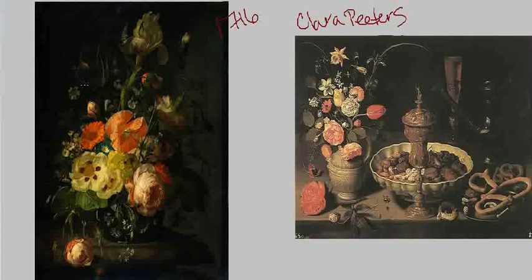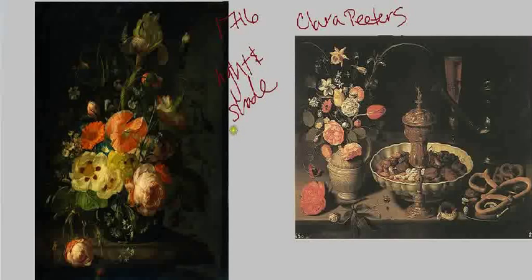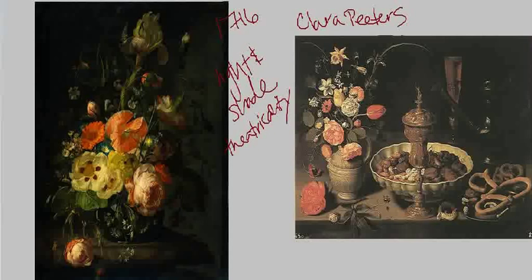We're seeing things we've been talking about in the Baroque that are so typical of the Baroque — that use of light and shade. We also have a kind of theatricality, which is part of that. And we have a really dynamic composition.